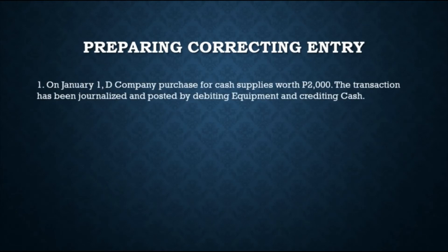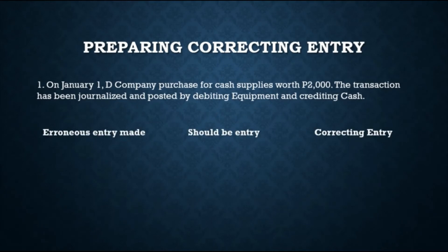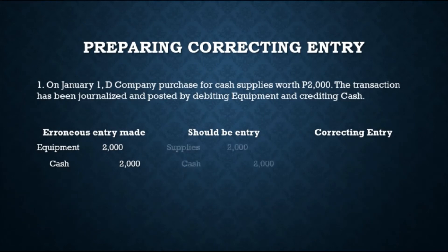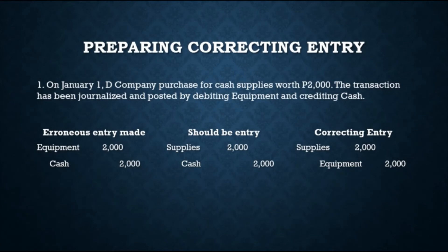To illustrate correcting entries: on January 1, the company purchased supplies for cash worth 2,000 pesos, but the transaction was journalized and posted as a debit to Equipment and a credit to Cash. To analyze, the erroneous entry debited Equipment, but the should-be entry is debit Supplies and credit Cash. The correcting entry should debit Supplies — because that is what was actually purchased — and credit Equipment, because no equipment was purchased and the erroneous debit must be reversed.